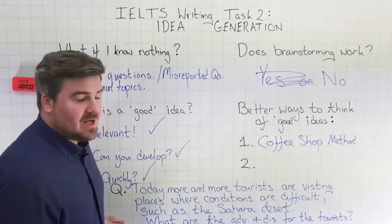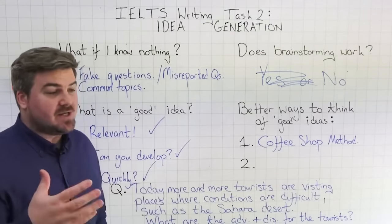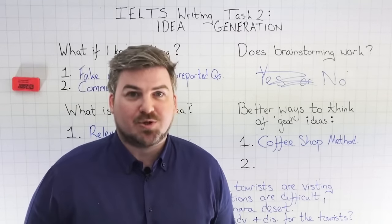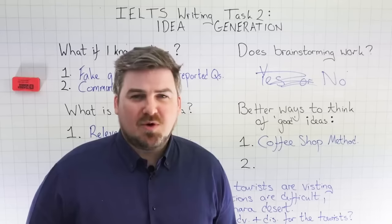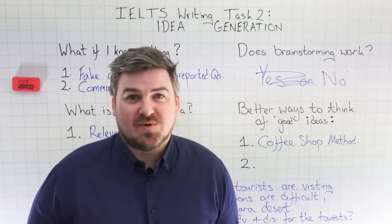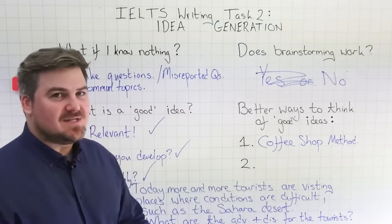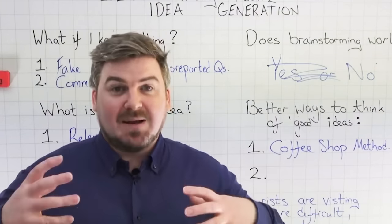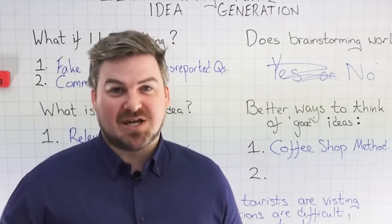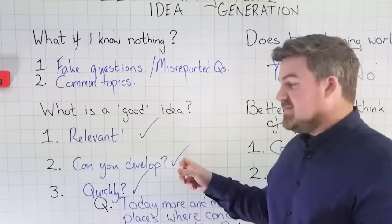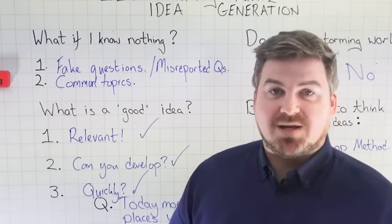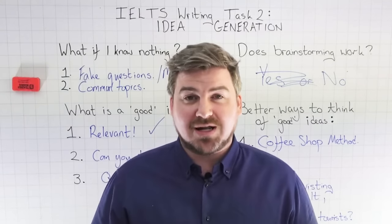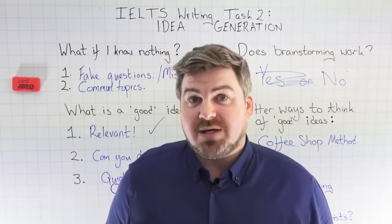So instead of looking at this as an IELTS Task 2 question, imagine you're sitting with your friend in a coffee shop and you're saying: a lot of people are going to more extreme places on holiday these days — what are the good and bad things about that for the tourists? Instead of using words like 'advantages and disadvantages', just simplify it: what are the good things? What are the bad things? By doing that, you will be able to easily generate ideas that are relevant, that you can develop, and that you can think of quickly. No brainstorming — just thinking about that for a few seconds will generate really good ideas pretty much immediately.